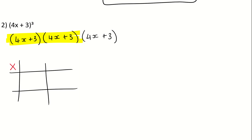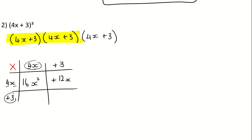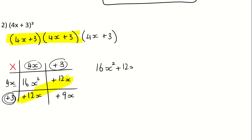I'm going to put my multiplication sign: 4x plus 3, and 4x plus 3. 4 times 4 is 16, x times x is x squared. 4x times a positive 3 is a positive 12x. And then 4x times a positive 3 is a positive 12x. And then I know that these two are like terms, so I simplify them.